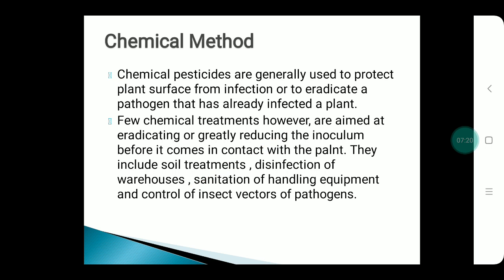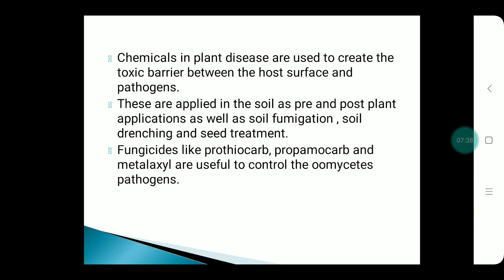Chemical method: chemicals are used as pesticides to protect plant surfaces from infection or to eradicate a pathogen that has already infected a plant. It includes soil treatment, disinfection of warehouses, sanitation of handling equipment, and control of insect vectors. Chemicals create toxic barriers between host surfaces and pathogens, applied as soil fumigation, soil drenching, and soil treatment. Fungicides used to control oomycete pathogens include propamocarb, propamocab, and metalaxyl.